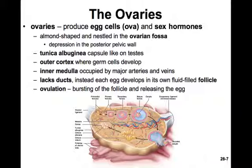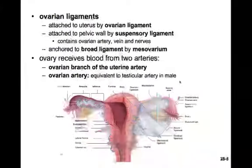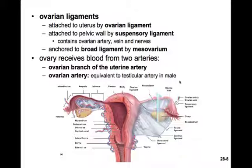Unlike testes, ovaries lack their own duct. In the testes, sperm were developing within the seminiferous tubules. In the ovary, each egg develops within its own fluid-filled follicle. You can see the various stages of the egg maturing in this spacious follicle. Ovulation is the event of the egg bursting out of this follicle. The ovary is held in place by several connective tissue ligaments: it's attached to the uterus by the ovarian ligament, and to the pelvic wall by the suspensory ligament. The suspensory ligament is also bundled with the ovarian artery and vein.